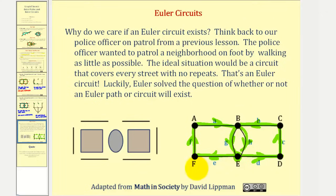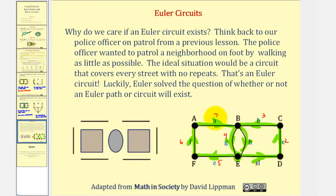The Euler circuit follows the path: one, two, three, four, five, six, seven, and eight. I hope you found this helpful.